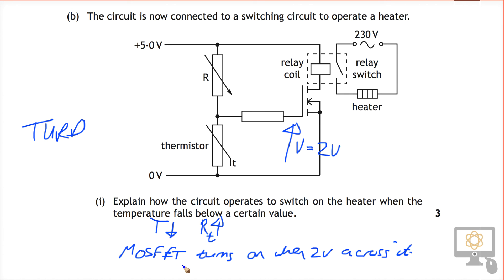Okay, so that's the second thing. And then lastly, if that MOSFET switches on, then that will allow current to flow through the relay coil, and the relay coil will become magnetic, it will close the relay switch, and that will cause the heater to switch on.